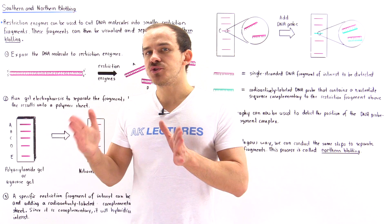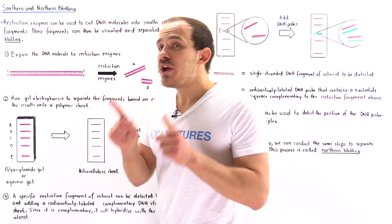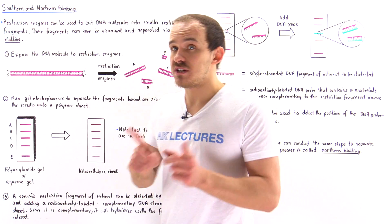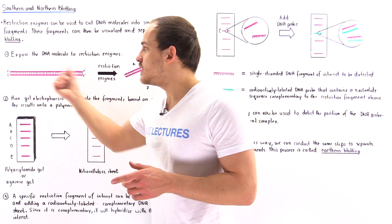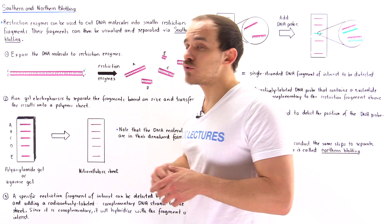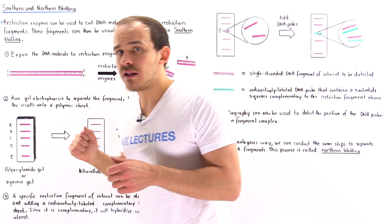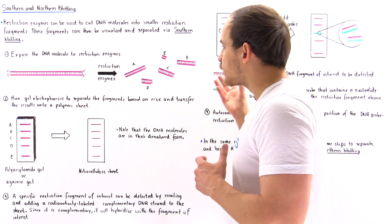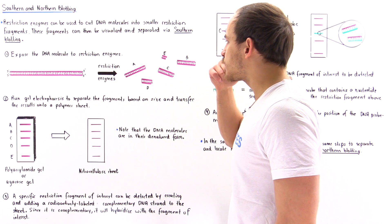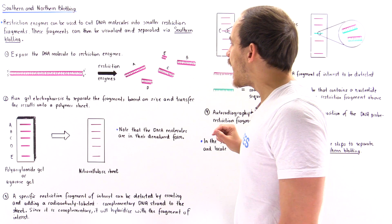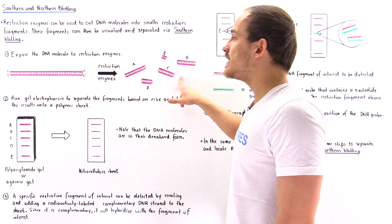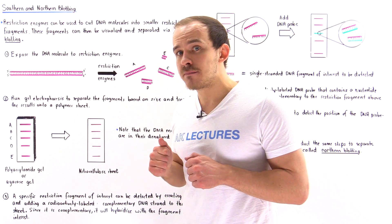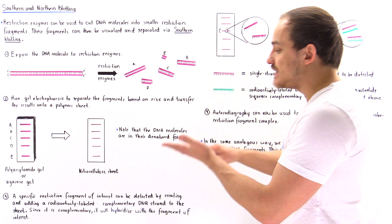Step one: we take our double-stranded DNA molecule that contains the gene we want to study. We know the sequence of nucleotides within that gene before we carry out the process — and we'll see why that's important in step three. We expose the DNA to specific restriction enzymes so that one of the resulting fragments carries that gene of interest. Let's say we break it into five fragments differing in size: the largest is fragment A, the smallest is fragment E, and the intermediate fragment C contains the gene we want to study and isolate.